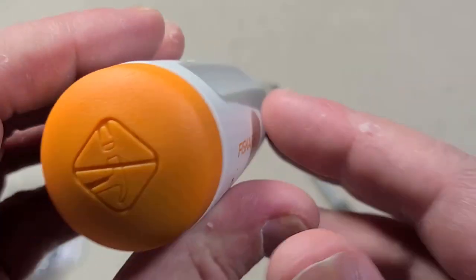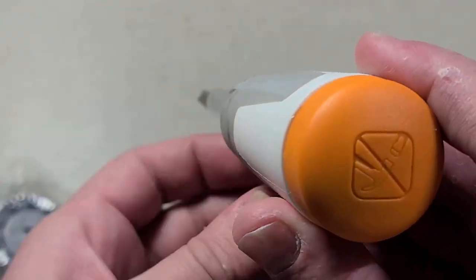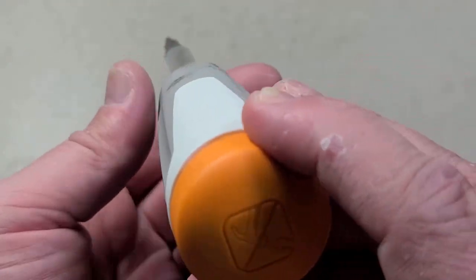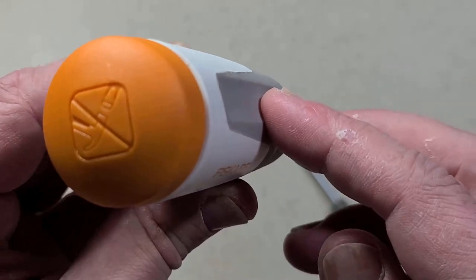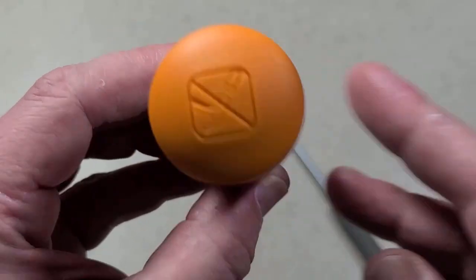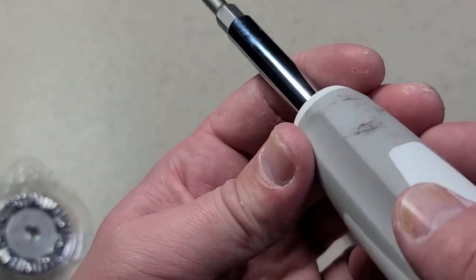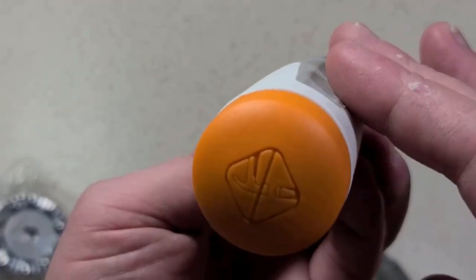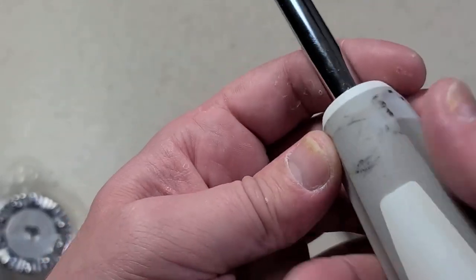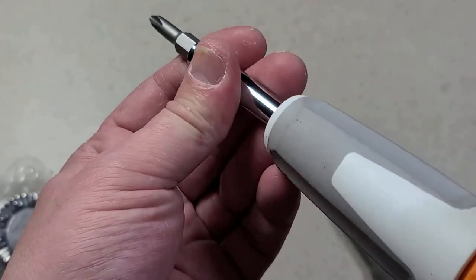We do have a softer overmold here. It is what I would call semi-trilobular, so it does have essentially three different sides but they're not super aggressive. My only real comment about it is if the flat sides were just a little bit deeper then you'd get a bit better grip purchase on it.